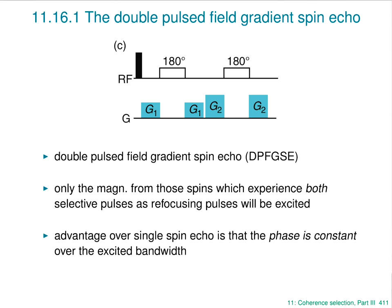There's a very nice property of doing a double echo: the phase error at the end of the second echo cancels. In fact, that's related to the Meiboom-Gill modification of the Carr-Purcell spin echo train — the same property used in a different context here. So this double gradient echo, although twice as long, has the very nice property that it generates magnetization selectively without a phase error, and everything else is dephased.